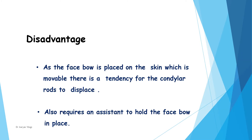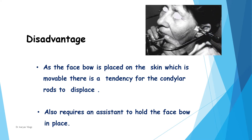The disadvantage of the fascia type is that as this facebow is placed on the skin which is movable, there is a tendency for condylar rods to displace, and it also requires an assistant to hold the facebow in place.